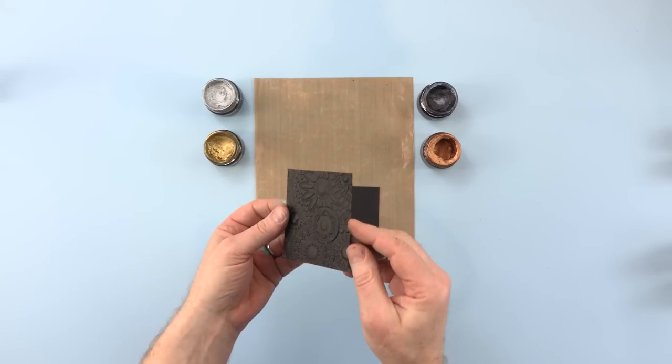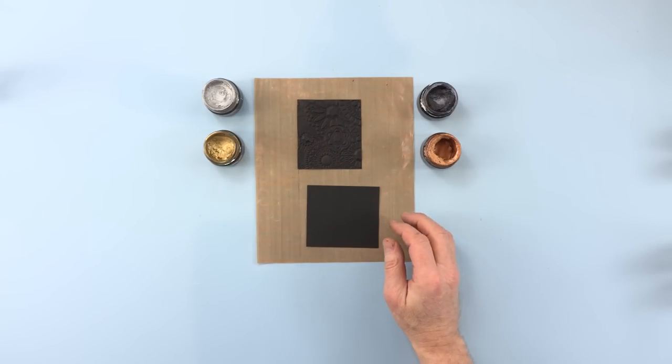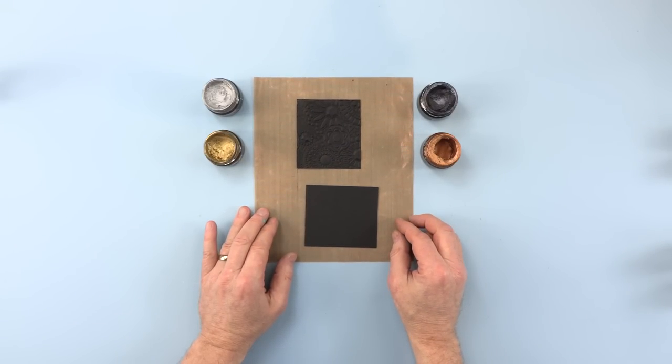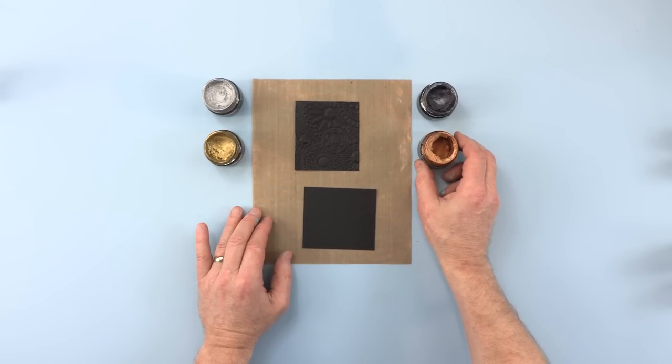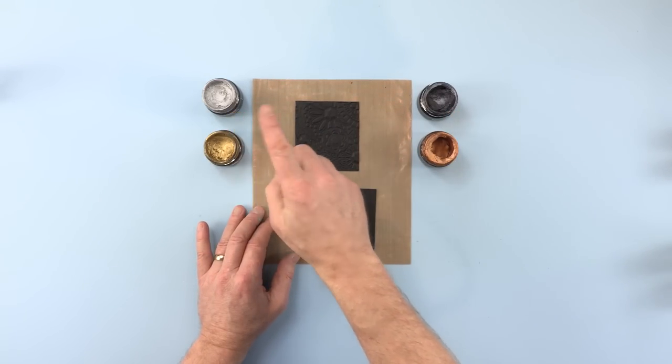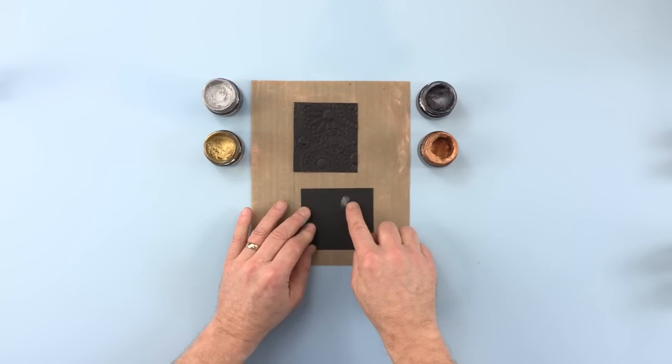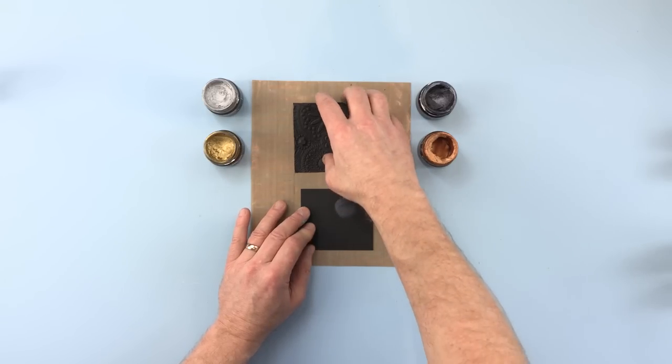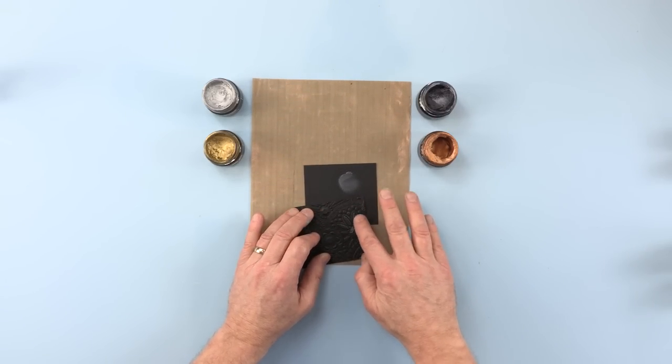Now the next technique I want to share with you, again, this is the embossed card from earlier. It's just simply, this is the simplest of the lot. It's just using gilding waxes. As you no doubt know, gilding waxes come in many different colors and tones. And there are many different brands. People have their own favorite. I like all of them pretty much. They all have their different properties. But I'm going to use four. I'm going to use one which is a graphite color, a silver, a gold, and a bronze. And I'm going to apply them first using my fingertip. You can use a soft cloth. I prefer to use my fingertip. I find I get more control that way.